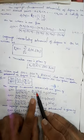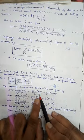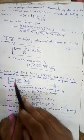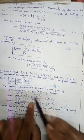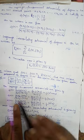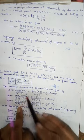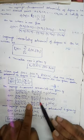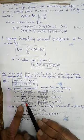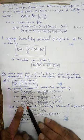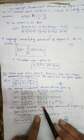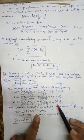Substitute all values to find the fundamental polynomials. L0(x) = (x-1)(x-3)/[(0-1)(0-3)] = (x-1)(x-3)/3 = (1/3)(x²-4x+3). L1(x) = (x-0)(x-3)/[(1-0)(1-3)] = x(x-3)/(-2) = (1/2)(3x-x²). L2(x) = (x-0)(x-1)/[(3-0)(3-1)] = x(x-1)/6 = (1/6)(x²-x).